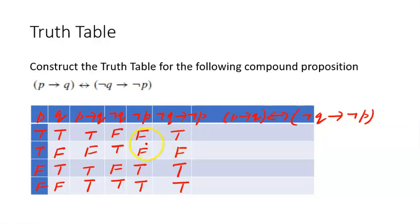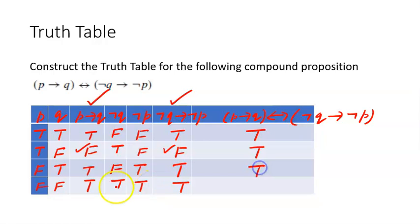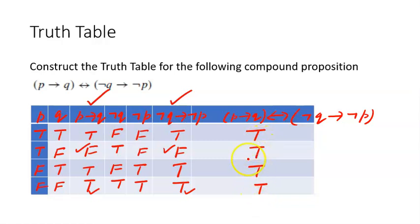Finally, the biconditional (p→q) ↔ (¬q→¬p) is true when both columns have the same truth value. Looking at the table: the values in both columns match in every row, so the final biconditional column is all true. This demonstrates that a conditional statement and its contrapositive are logically equivalent.